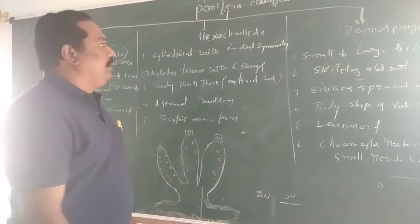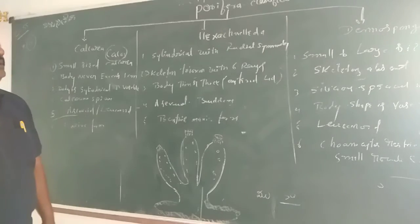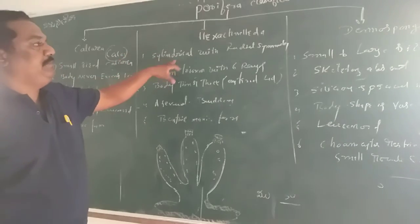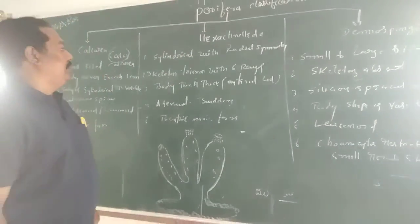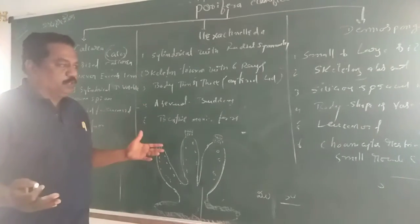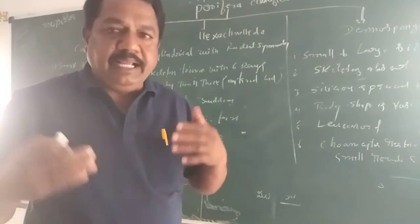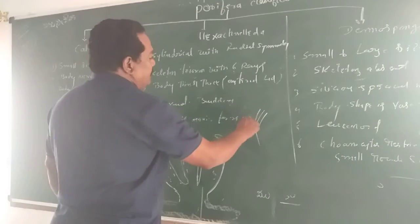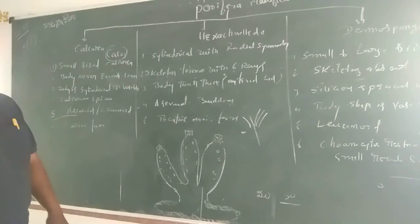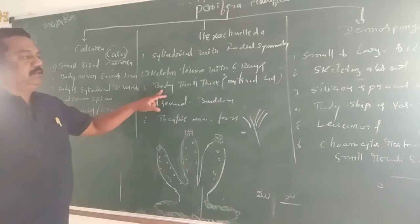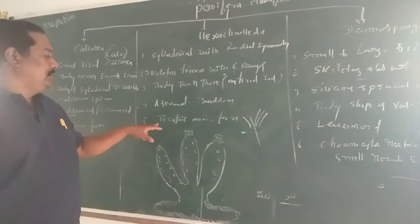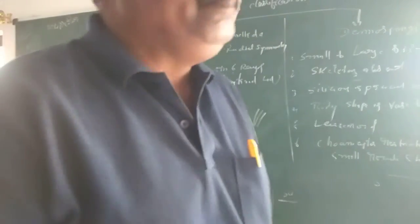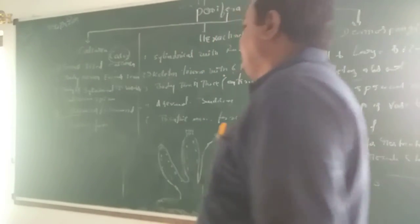The second class is Hexactinellida. In Hexactinellida, the endoskeleton system is made by siliceous or silicon spicules. The skeleton of spicules is triaxon type — each triaxon spicule has 6 rays, as the name 'hexa' indicates. The skeleton is arranged with 6 rays. The body is also asexual and these are basically marine forms, present at the bottom of the ocean.